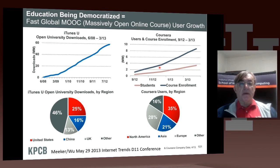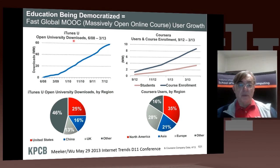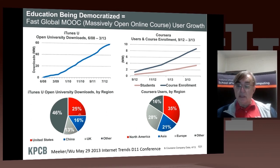Here are some statistics about the actual field of MOOCs — massively open online courses. Coursera's course enrollment is measured in millions of users. The Open University, presumably the UK system, shows downloads growing rapidly on iTunes. The Open University's demographics show 25% US, 30% UK, and 16% China — so a good export for the United Kingdom. For Coursera, 35% are from North America, 21% from Asia, and 28% from Europe — similar broad demographics but slightly different from the Open University.